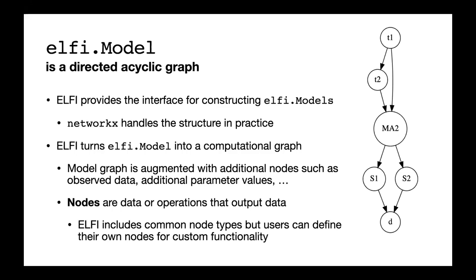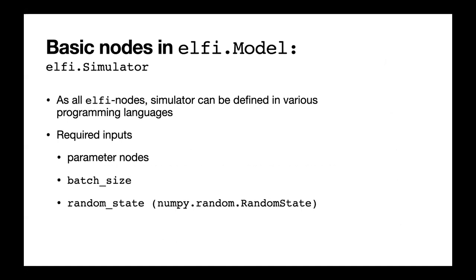The nodes in the ELFI model are either data or operations that output data. For example, the prior nodes output the prior data, and then the simulators take the prior data and output the simulator output. The summary statistics take the simulated data and output some summarized data. We include out-of-the-box some common node types, but you can also define your own nodes for custom functionality. Nodes can be defined in various programming languages — simulators often use C++ for speed, or predefined R simulators.